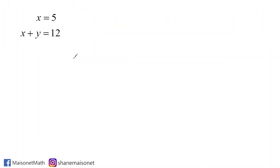In this system of equations we have x equals 5 and x plus y equals 12. Now when figuring out the solution for a system, we are looking for the x and the y value that would satisfy both equations. Sometimes one of the two equations is actually going to tell you what x or y is equal to. If we take a look at this first equation, it is telling us that x is exactly 5, so we already know what one of our two answers is.